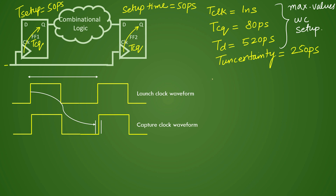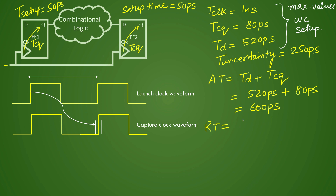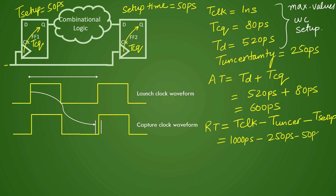Now let us start this calculation. Your arrival time consists of data path delay plus TCQ delay: 520 picoseconds plus 80 picoseconds, which gives 600 picoseconds. Similarly, required time is calculated as clock period minus uncertainty minus setup time. Clock period is 1 nanosecond, that is 1000 picoseconds, minus uncertainty of 250 picoseconds, minus setup time of 50 picoseconds. So your required time is 1000 minus 250 minus 50, which equals 700 picoseconds.